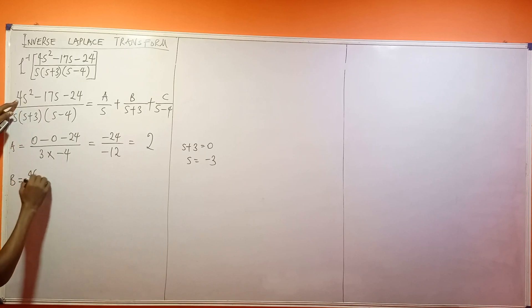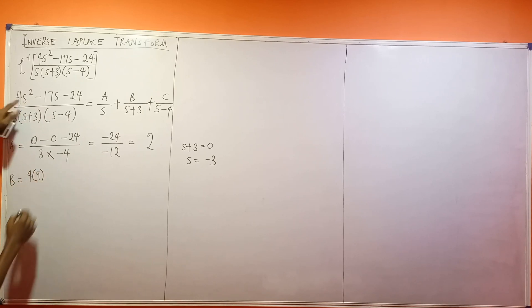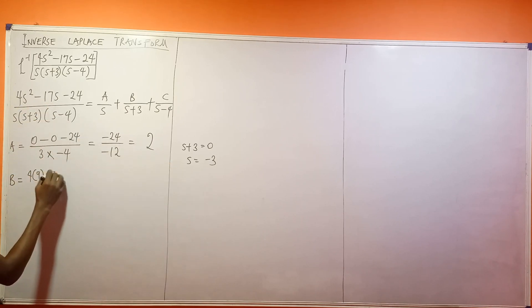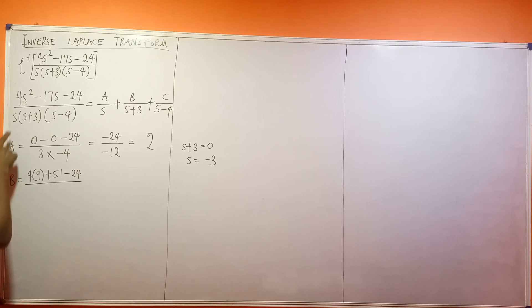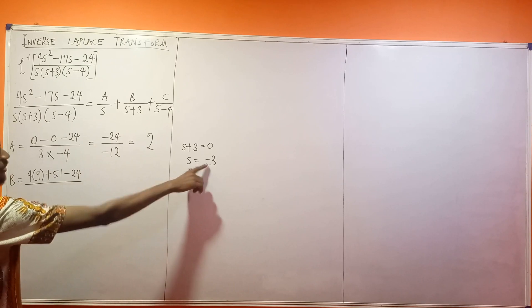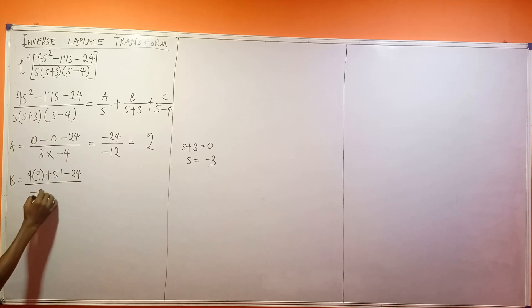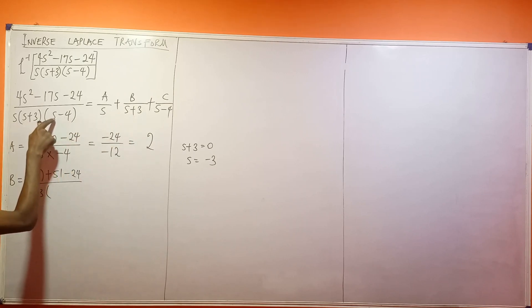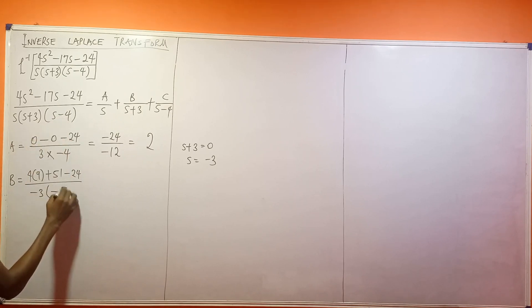Then minus 17 times minus 3 will give me plus 51. Then I have minus 24. Everything divided by s, we said s should be minus 3, so minus 3 bracket. Since s plus 3 was what we used for our substitution, it's going to come here. Minus 3 minus 4 will give me minus 7.